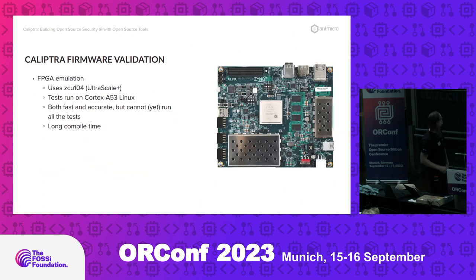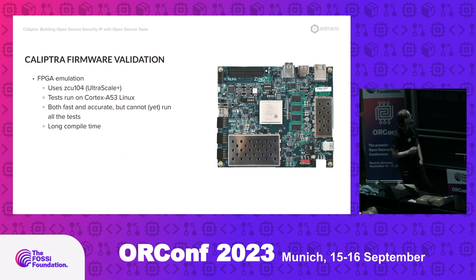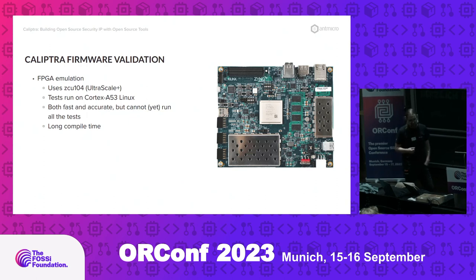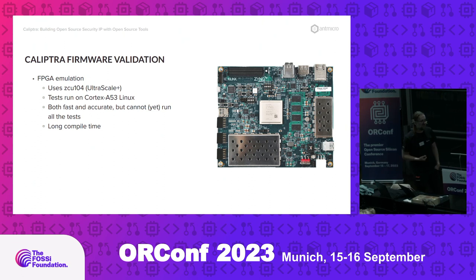We also have infrastructure for running Calyptra on an FPGA. The default target is the Ultrascale Plus ZCU-104, and we have tests running on Linux on the Cortex-A53 core. Those tests are pretty cool because they're both fast and accurate, but unfortunately they're not yet fully featured, and the bitstream takes a long time to generate. So it's not ideal, but it's a good platform as well.